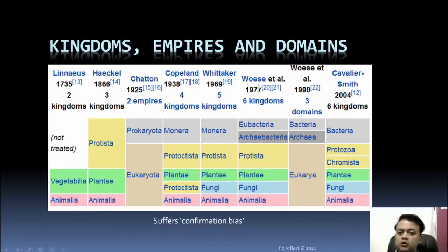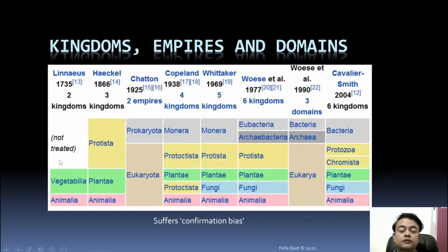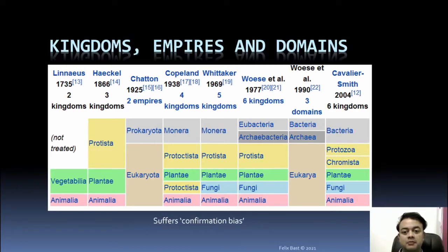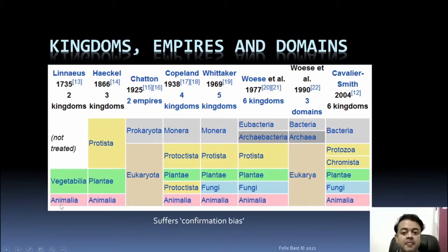Going back in time, in 1735 Linnaeus started with two kingdom classifications: Vegetablia and Animalia. During this time, bacteria were actually known by Anton van Leeuwenhoek, but Linnaeus was probably not updated with that discovery, being in Sweden while Holland was quite nearby.